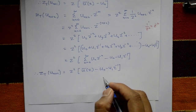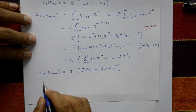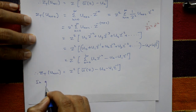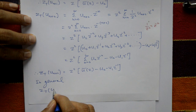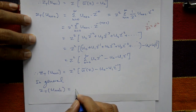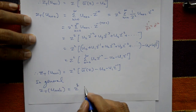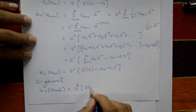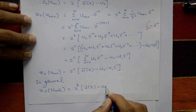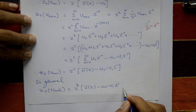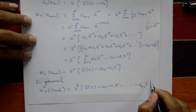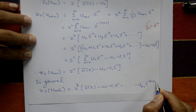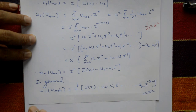In general, the Z-transform of u(n+k) equals Z raised to k times U(z), minus u(0), minus u(1) Z raised to minus 1, minus ... minus u(k-1) times Z raised to minus (k-1). This is the required general solution.